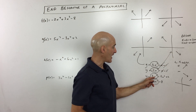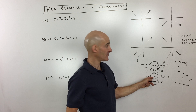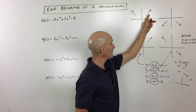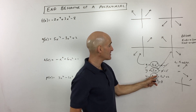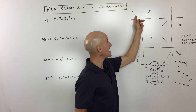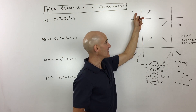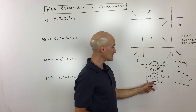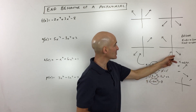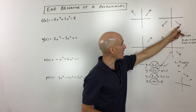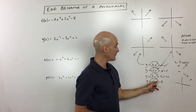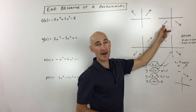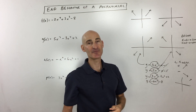The third example has a positive leading coefficient, so it goes up to the right. It has an even degree, so it has the same end behavior on both sides — up to the left as well. The fourth example has a negative leading coefficient, so it goes down to the right. Because it also has an even degree, it goes down to the left as well — same end behavior on both sides.